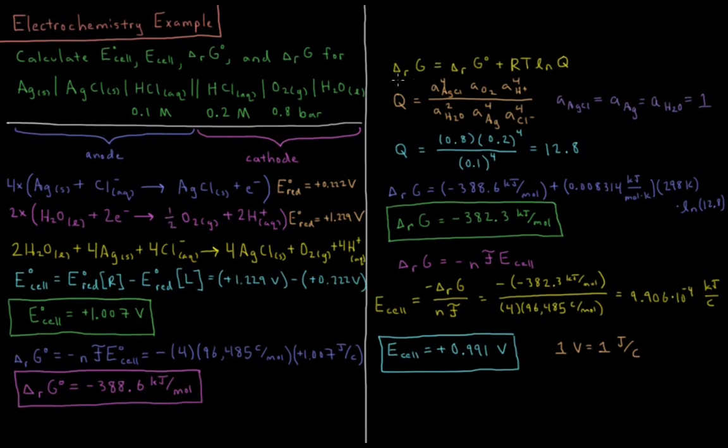So for the Gibbs energy of reaction at the conditions that we have given, delta G of reaction equals standard Gibbs energy of reaction plus RT times the natural log of the reaction quotient. The reaction quotient is, in the numerator, the activity of all of the products to the power of their stoichiometric coefficients, divided by, in the denominator, all of the reactants to the power of their stoichiometric coefficients.